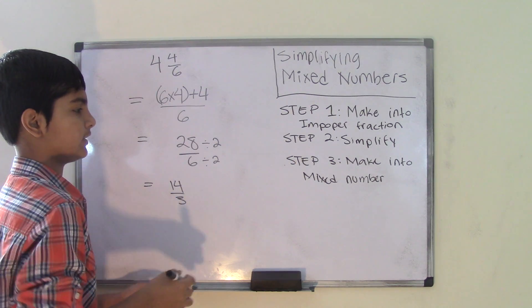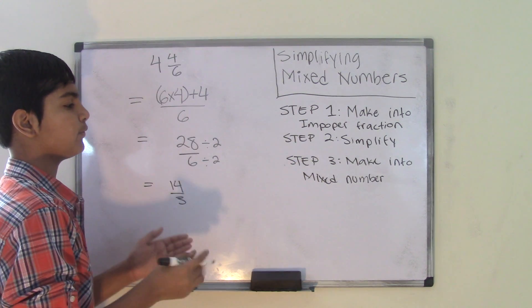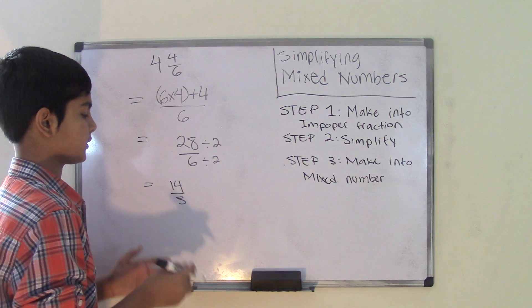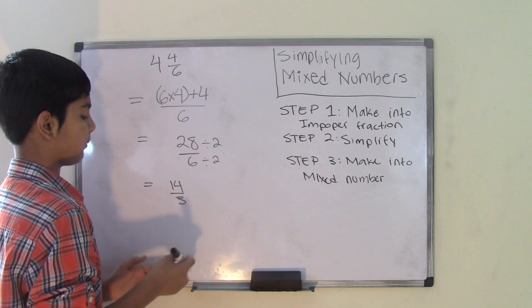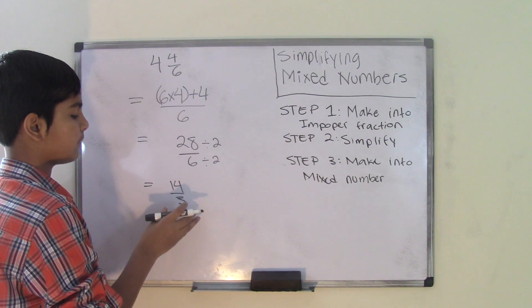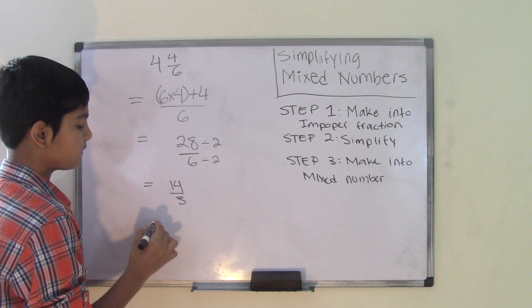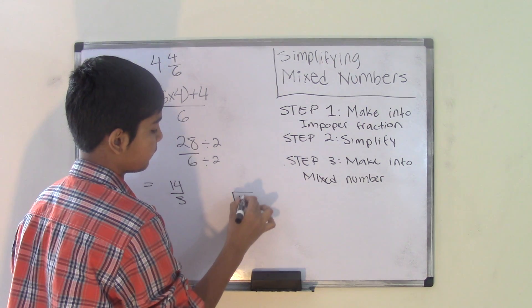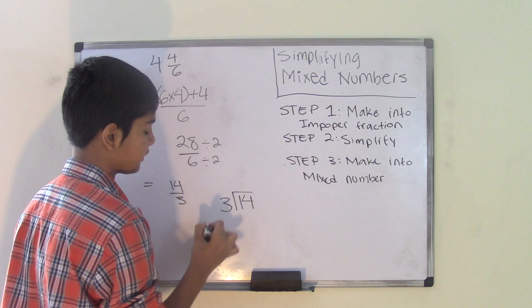Now 14 over 3 cannot be further simplified, so we move on to step number 3, which is make into a mixed number. So you have to turn this back into a mixed number. So since this is an improper fraction, what we need to do is we need to divide the numerator, which is the number 14, by the denominator, which is the number 3.